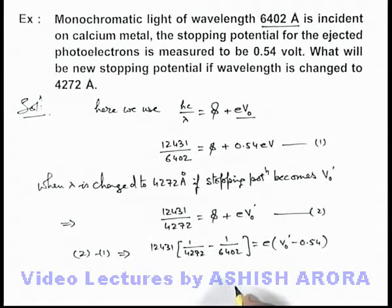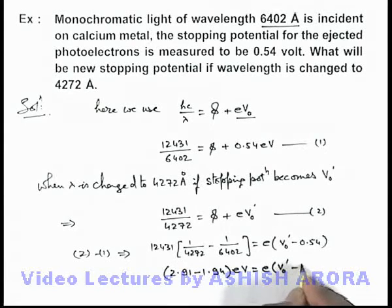If you just calculate these values in electron volt here you can see the result will be 2.91 minus 1.94 electron volt is equal to e multiplied by V₀ prime minus 0.54. And here e also gets cancelled out and on simplifying, V₀ prime we are getting V₀ prime is equal to 1.51 volt. That will be the answer to this problem.